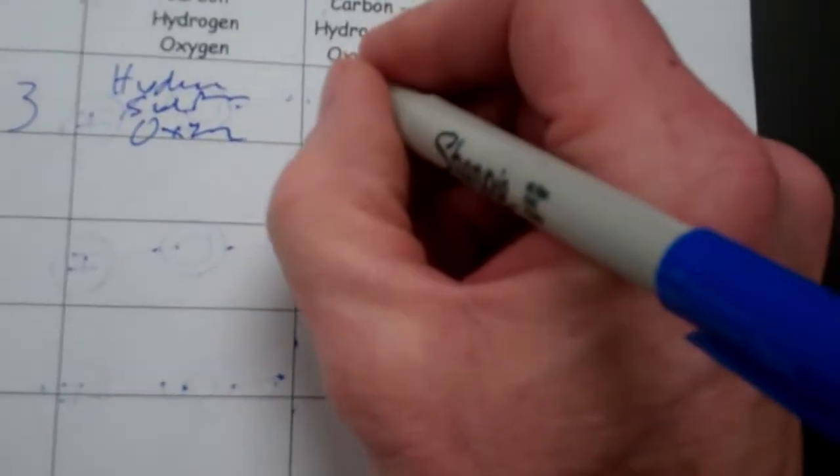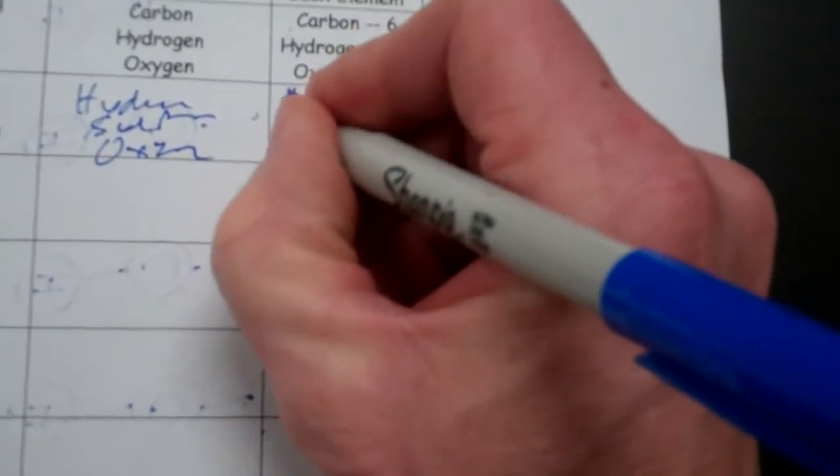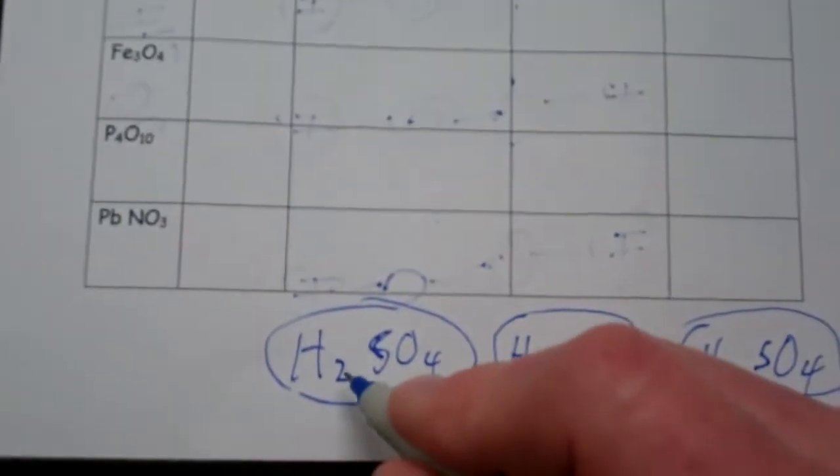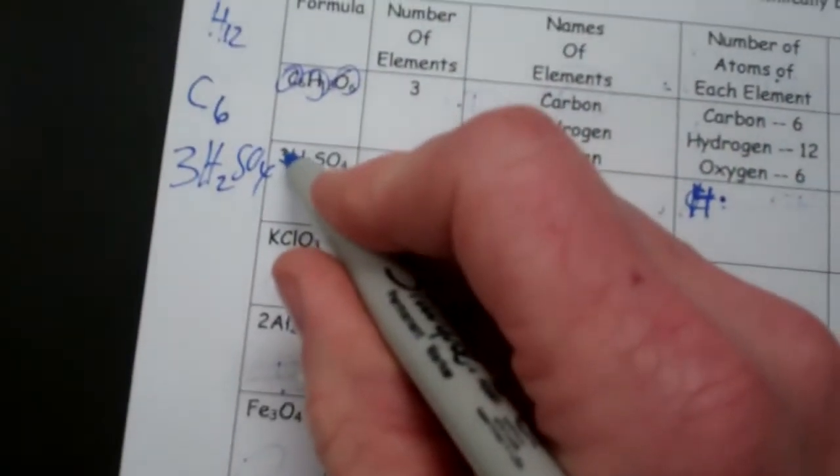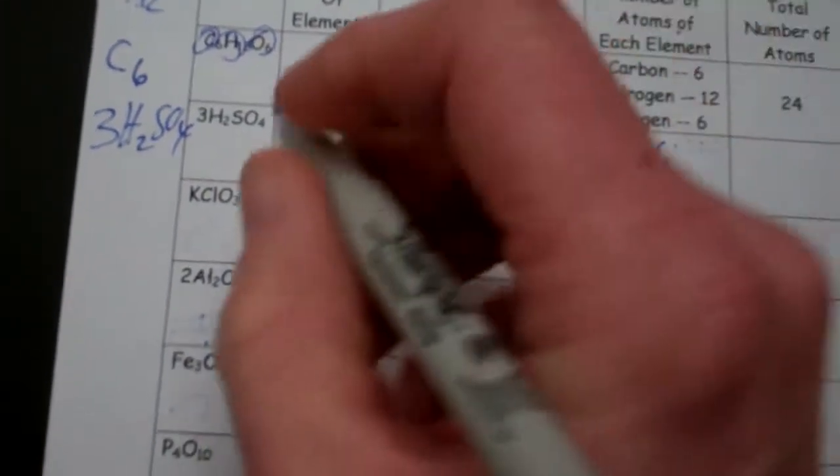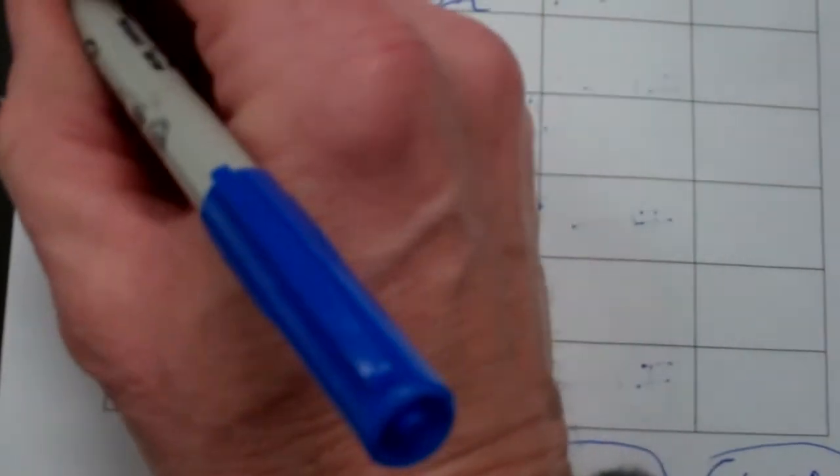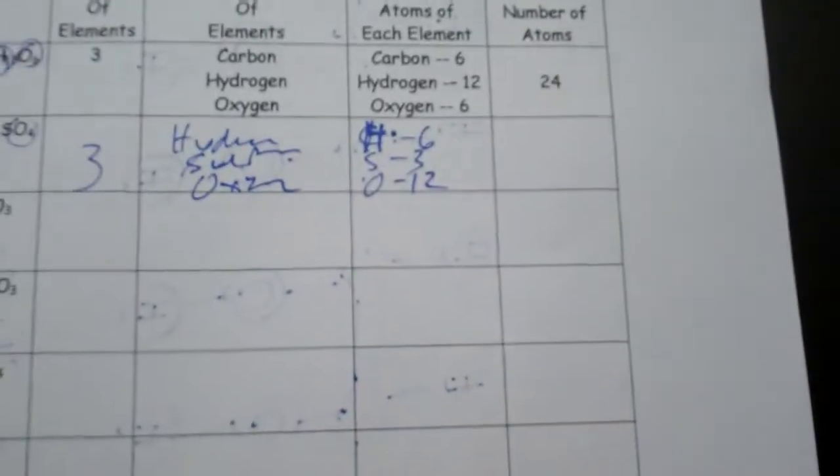And how many atoms of each element? Well, for hydrogen, there would be two in each molecule, but there's three molecules. So there's 2, 4, 6, or we could just take 3 times 2 is 6. There's 1 sulfur in each molecule. But since there's 3 molecules in this formula, there's 1, 2, 3 sulfurs. And there's 4 oxygens in each molecule, 4, 4, and 4. But we have three of those molecules. So there's 4, 8, 12. So there's 12 oxygens.